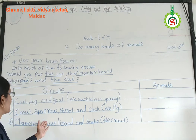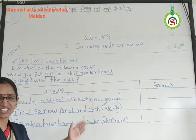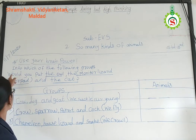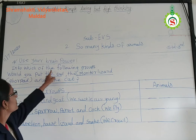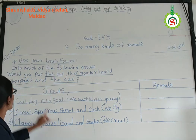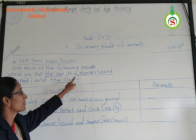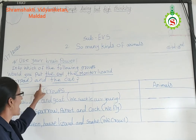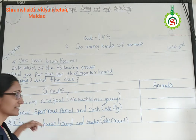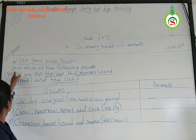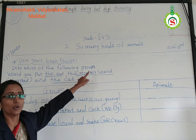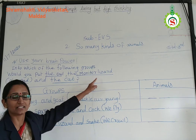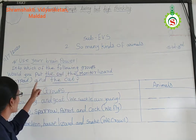Students, look at the whiteboard. I have drawn here one child. Here is one question — listen carefully. Into which of the following groups would you put the owl, the monitor lizard, and the cat? The monitor lizard means a crawl animal. Here are three options.